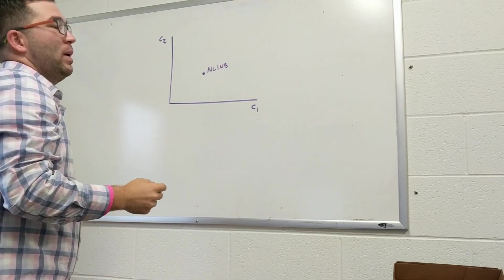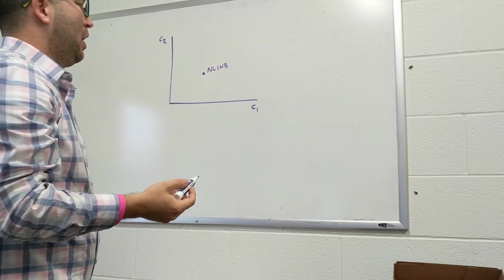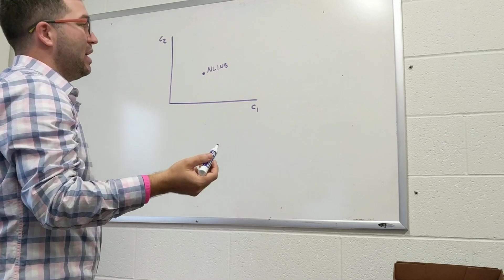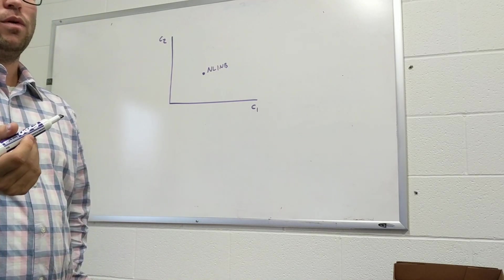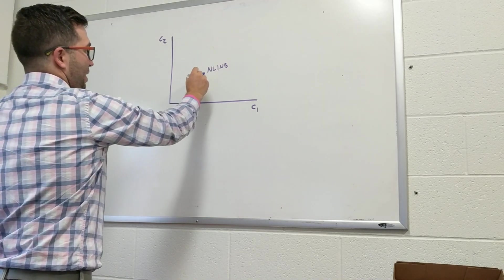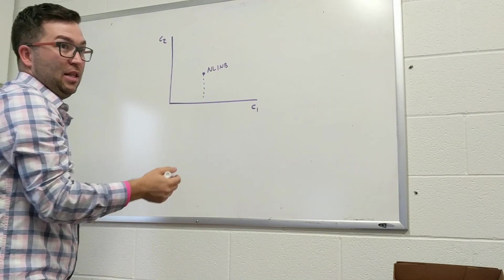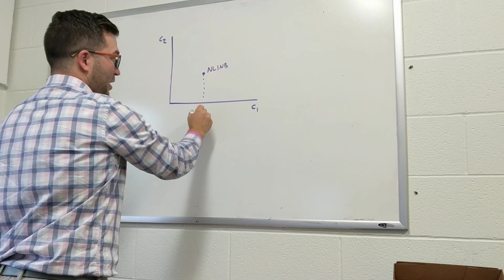The idea of the no lending, no borrowing point is just somebody who is not borrowing any money against their future income. They're not saving any of their current income for future. So down here, we have our overall current resources, and this problem in the course pack, it's just income.